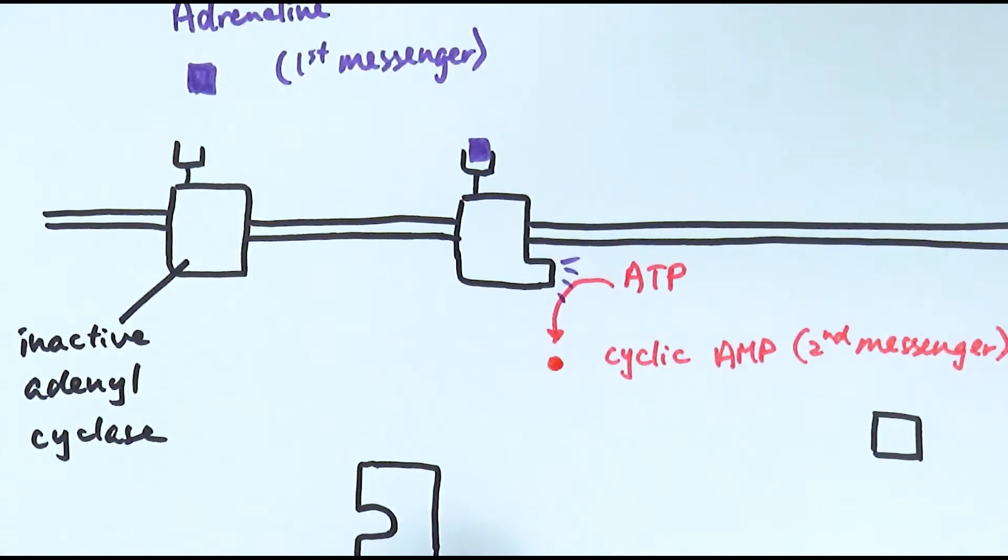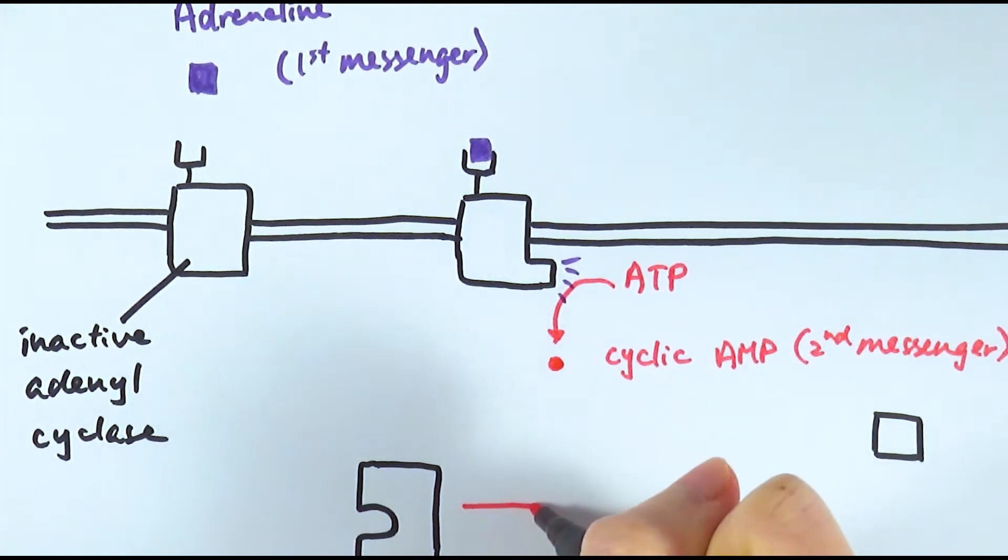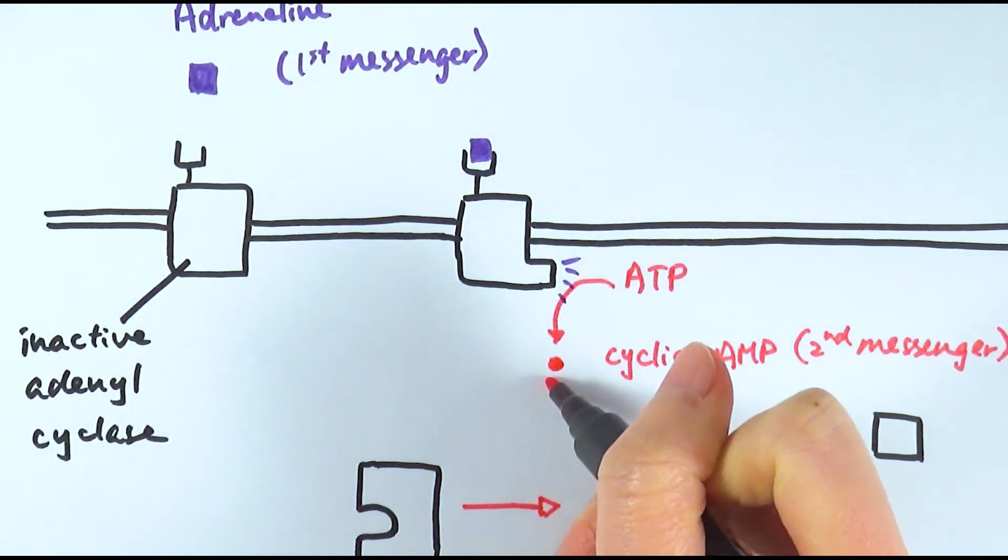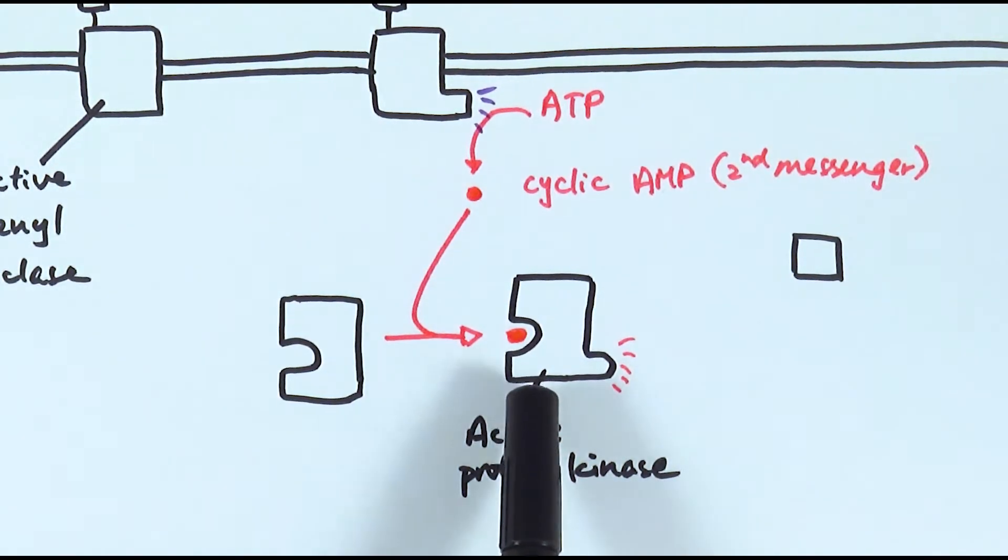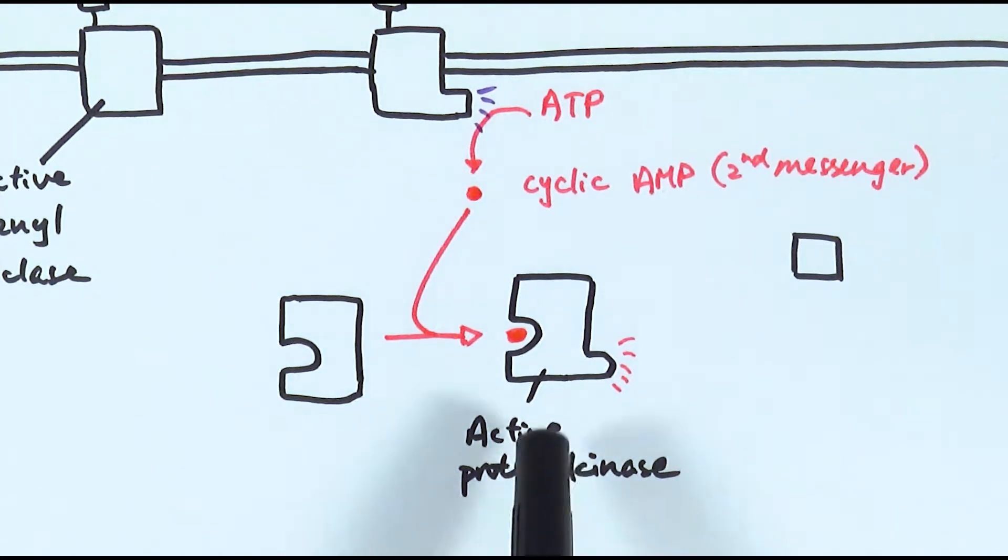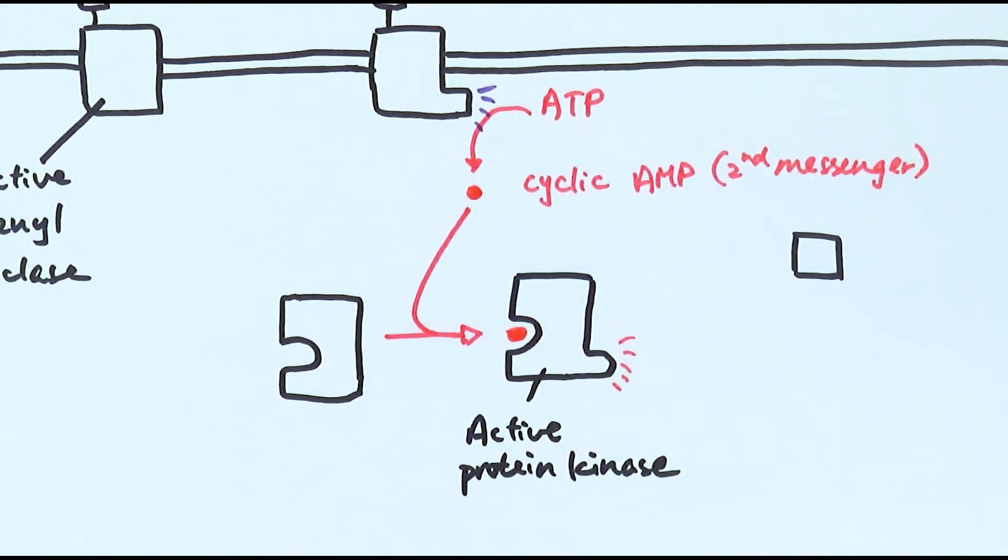What this cyclic AMP or cAMP can do is that it will be able to bind to other enzymes or proteins inside the cell to cause different effects. For example here we've got an inactivated protein kinase, and it will be able to turn into an activated version. The cyclic AMP when it binds to the protein kinase will activate that, again by causing a conformational change.